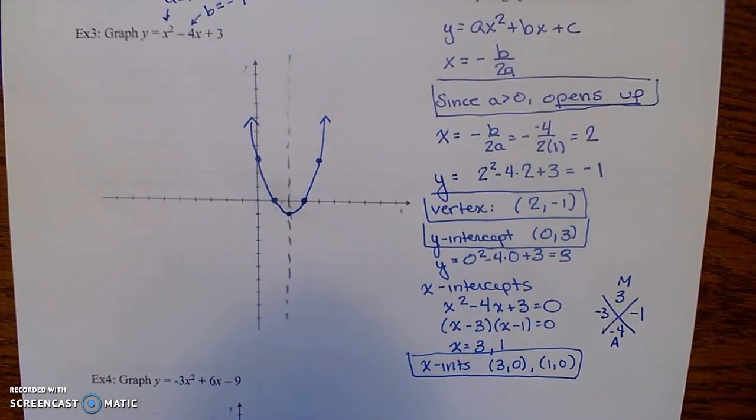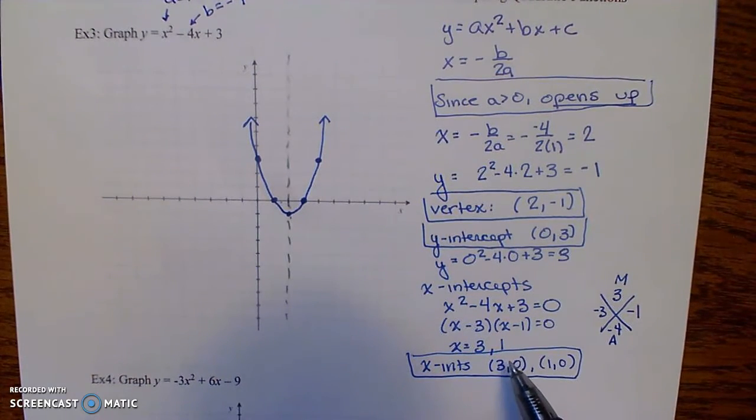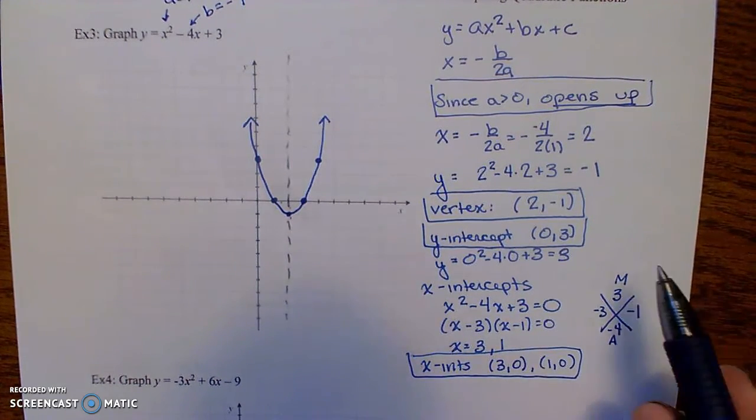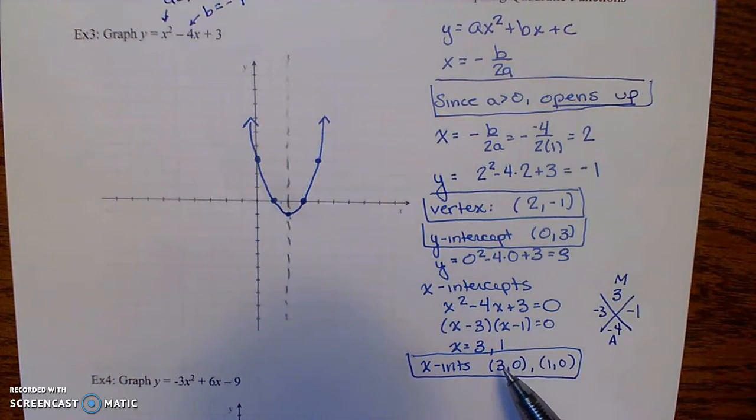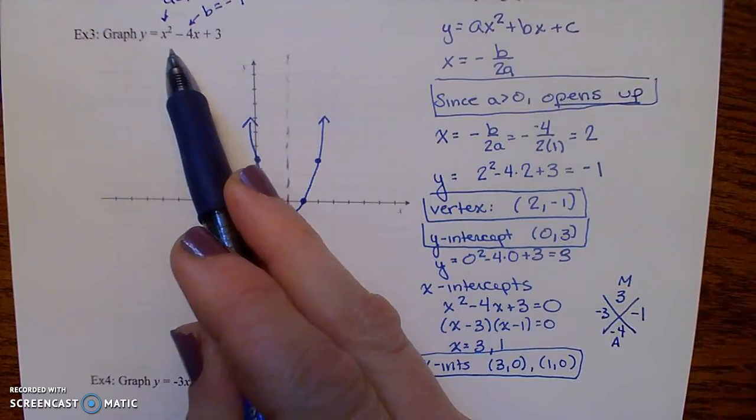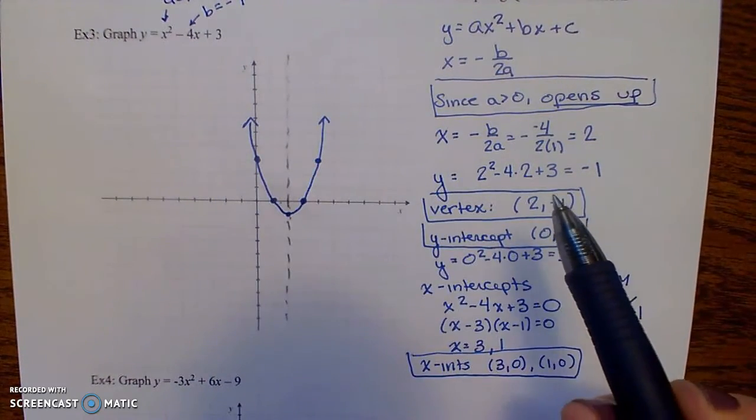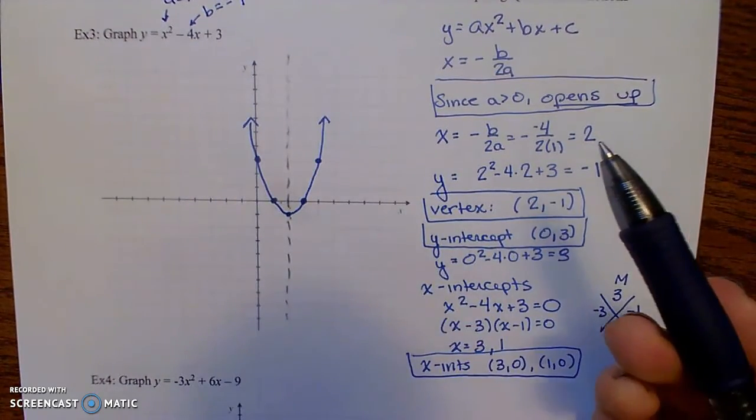One thing to note, on HAWKS, they might give you, instead of you finding your own x values to plug in, they actually might say, find a point on the graph by plugging in x equals 6. So all you would do is just plug the number that they give you in for x to figure out what the corresponding y value is. That's if they give you an x-coordinate to plug in.